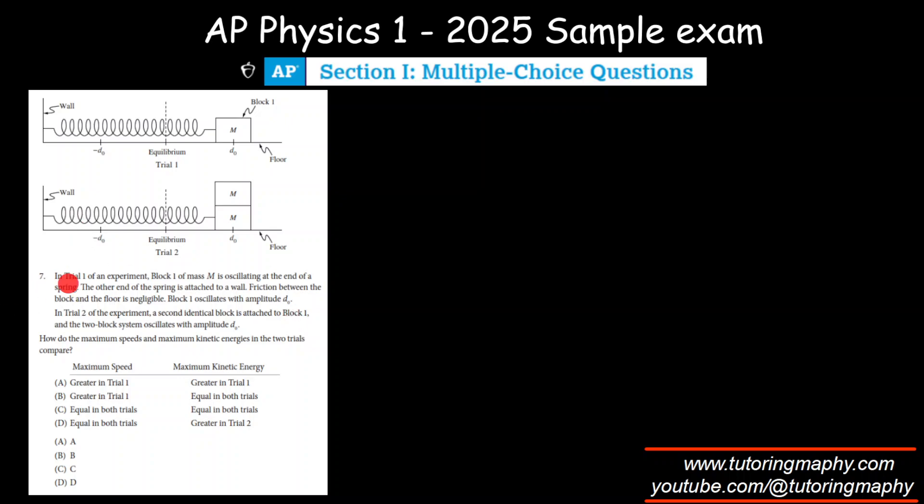Alright, let's do this question. We're talking about Trial 1 of an experiment where a block of mass M is oscillating at the end of a spring with the other end attached to a wall. Friction is negligible and it oscillates with amplitude D not.